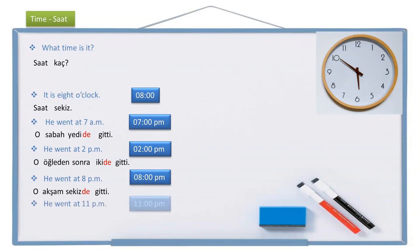And lastly, if the sentence is he went at 11 p.m., then I understand he went in the night. He — o, went — gitti, at 11 — onbirde, night — gece. He went at 11 p.m.: o gece onbirde gitti.